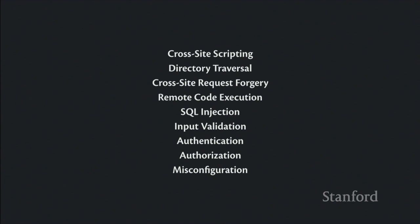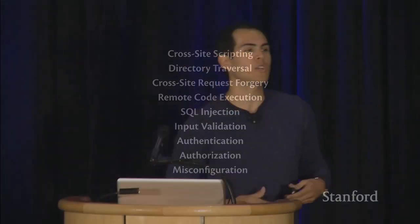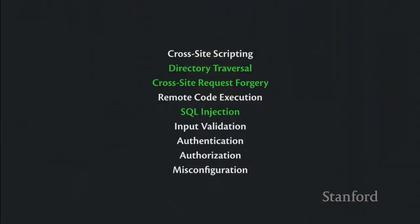I want to separate these vulnerabilities into three buckets. The first are things like directory traversal or cross-site request forgery that frameworks like Spring or Rails already handle pretty well. If you write your application in Rails or Spring Boot, you're probably not vulnerable to these things.